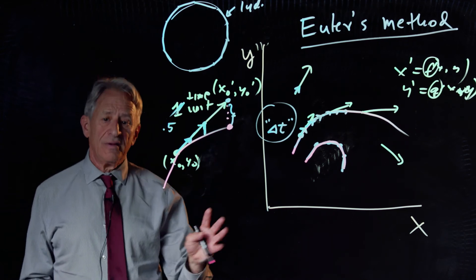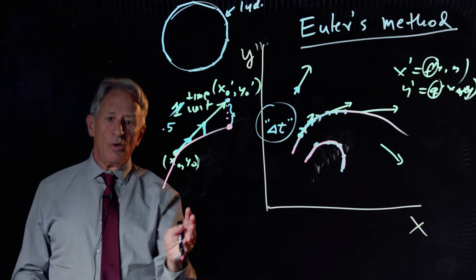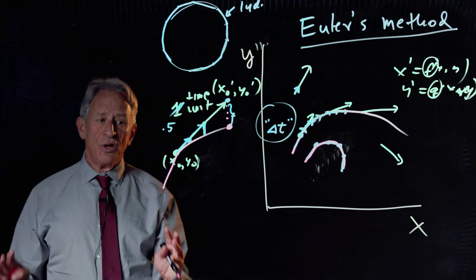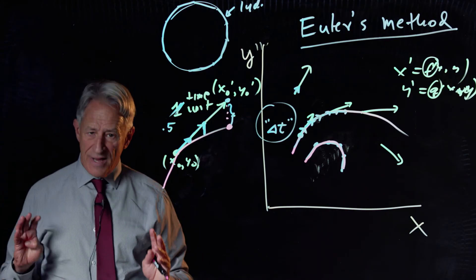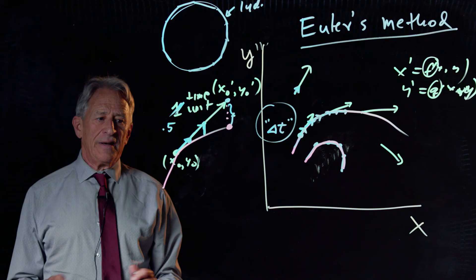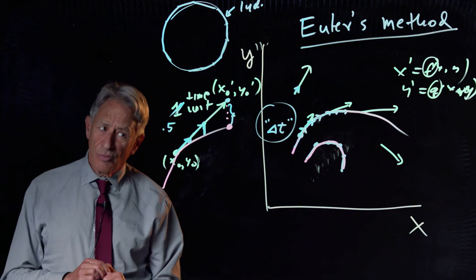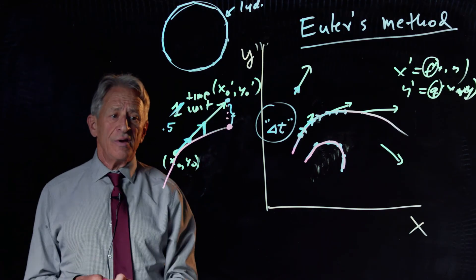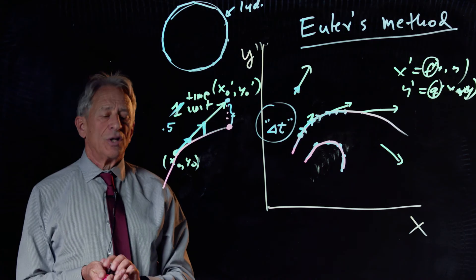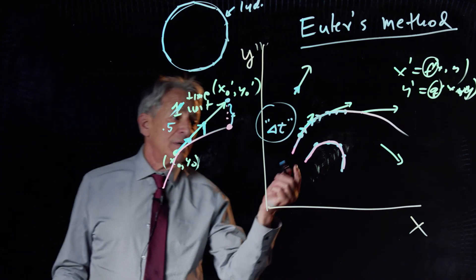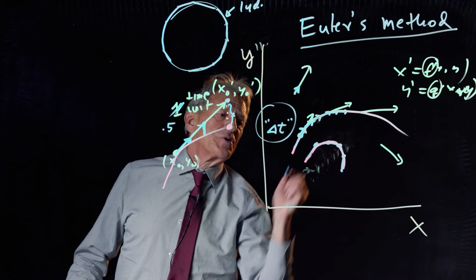This is the method that will guarantee you an approximation to any degree of accuracy. And if you're not happy with the degree of accuracy of your method, lower delta T and take even smaller steps.